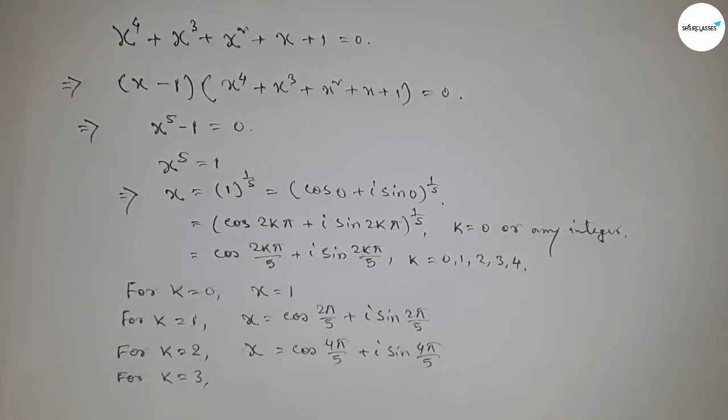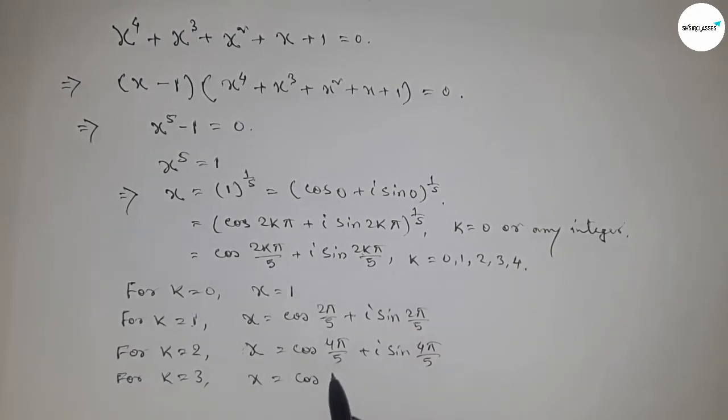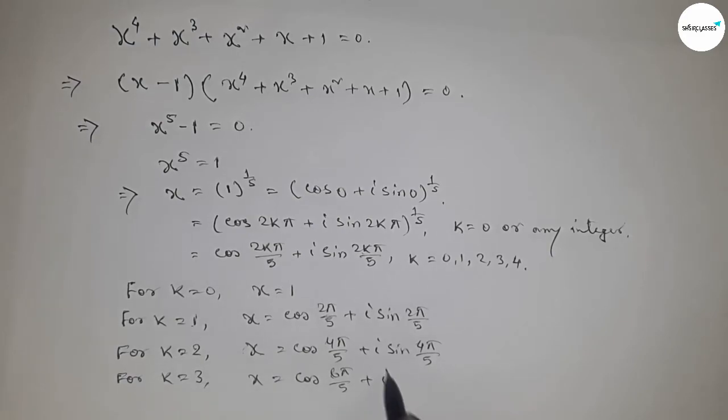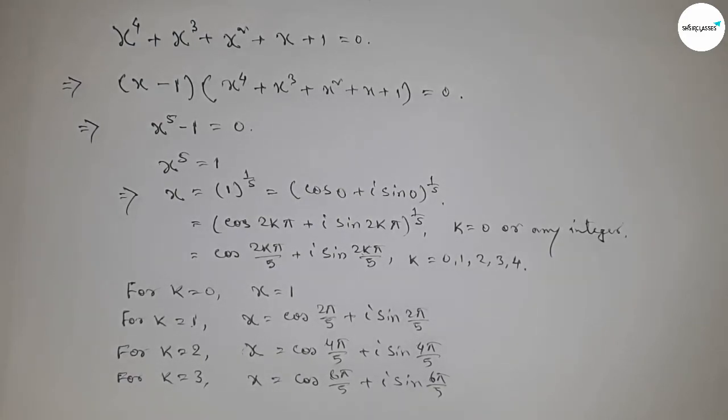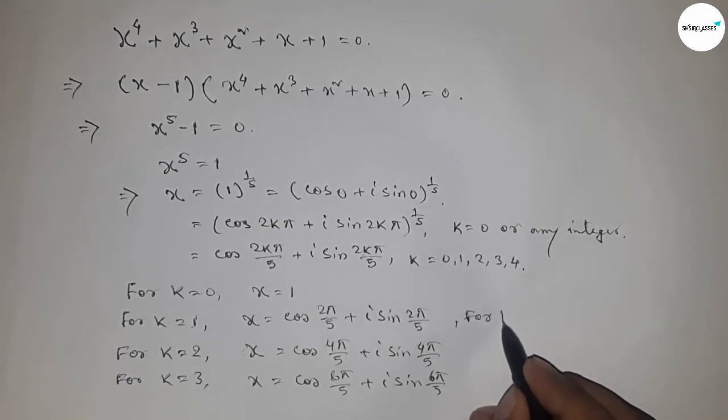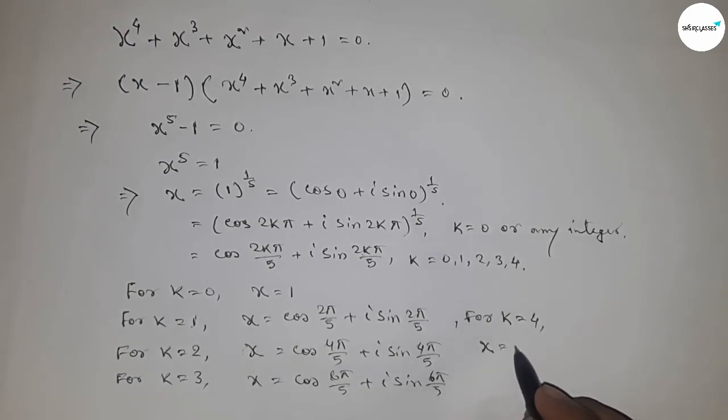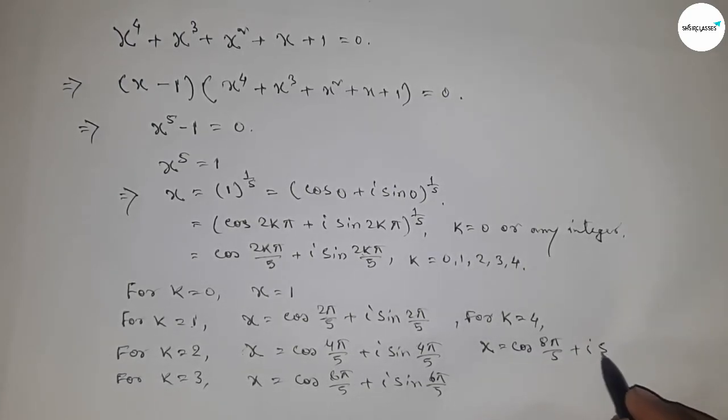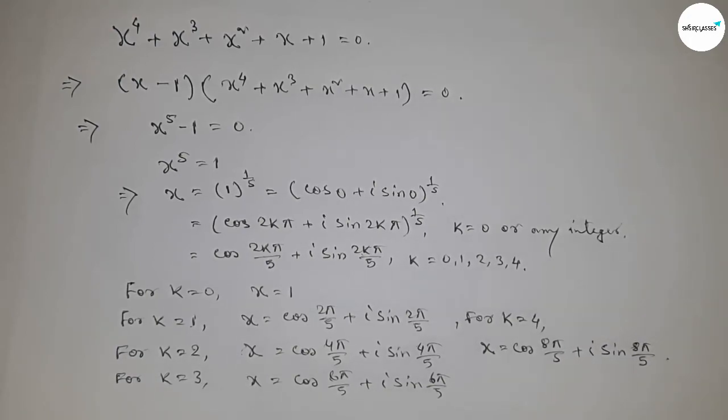x = cos(6π/5) + i sin(6π/5). For k = 4, x = cos(8π/5) + i sin(8π/5).